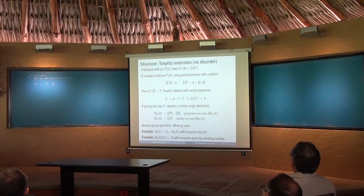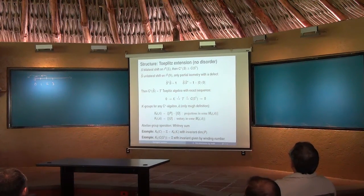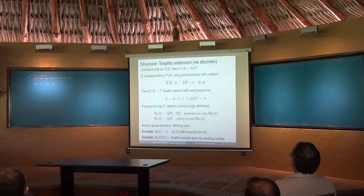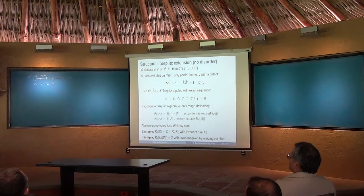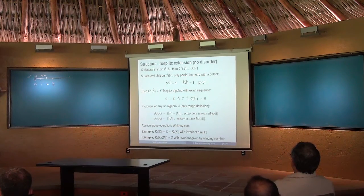I showed you that boundary states really exist by a very simple calculation, but now I want to show you that there's a mathematical structure behind it which will survive to higher dimensions. That's linked to what is called the Toeplitz extension. The basic objects we had were just the shift operator acting on L2 of Z, and the unilateral shift acting on L2 of N. We built matrices out of those. You can use a C*-algebra built out of the shift operator — take polynomials in the shift and close with respect to norm topology. By Fourier transform, this C*-algebra is simply the continuous functions on the circle.